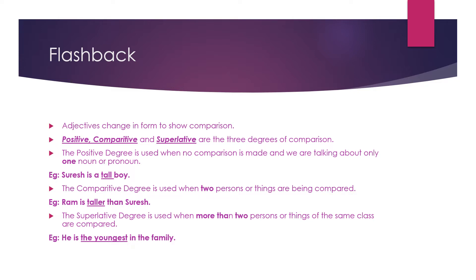The positive degree is used when no comparison is made and we are talking about only one noun or pronoun. If you are talking about only one person or one thing and there is no comparison with any other person or thing, that is the positive degree. For example, 'Suresh is a tall boy.' Here we are talking only about Suresh and there is no comparison, so the adjective 'tall' is in the positive degree.